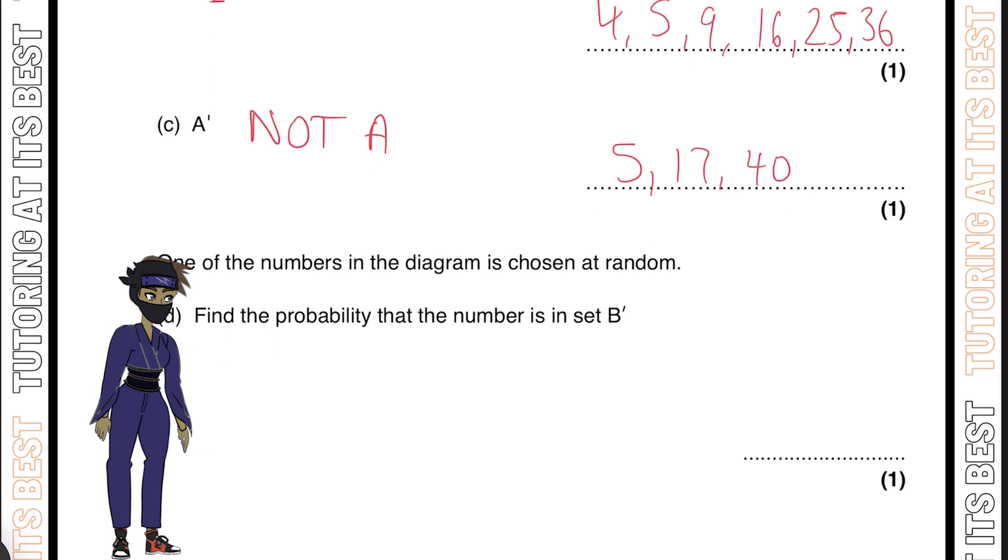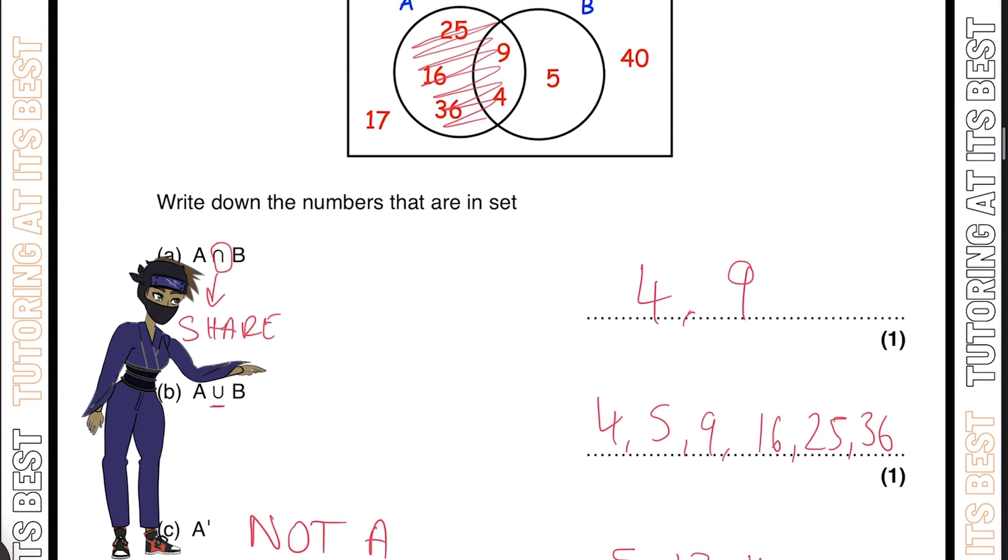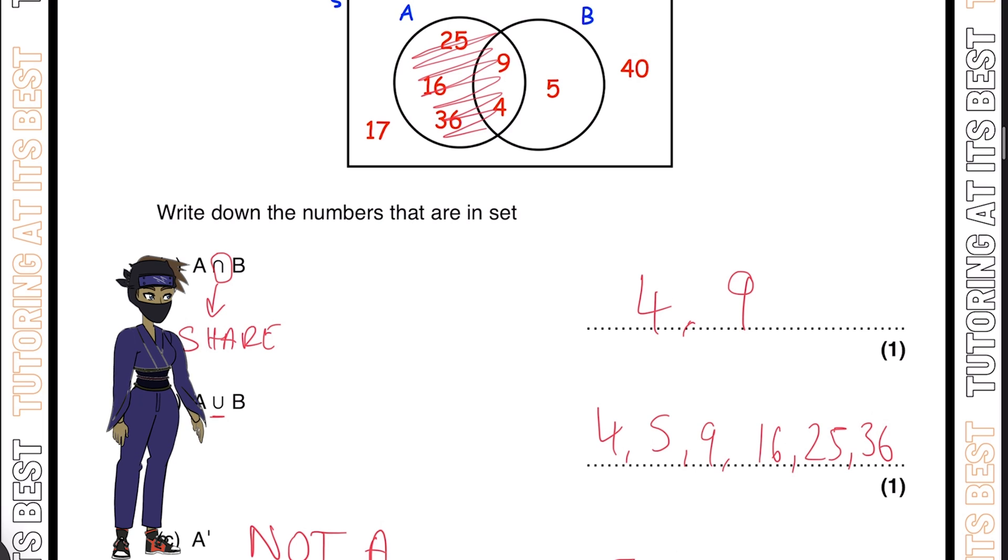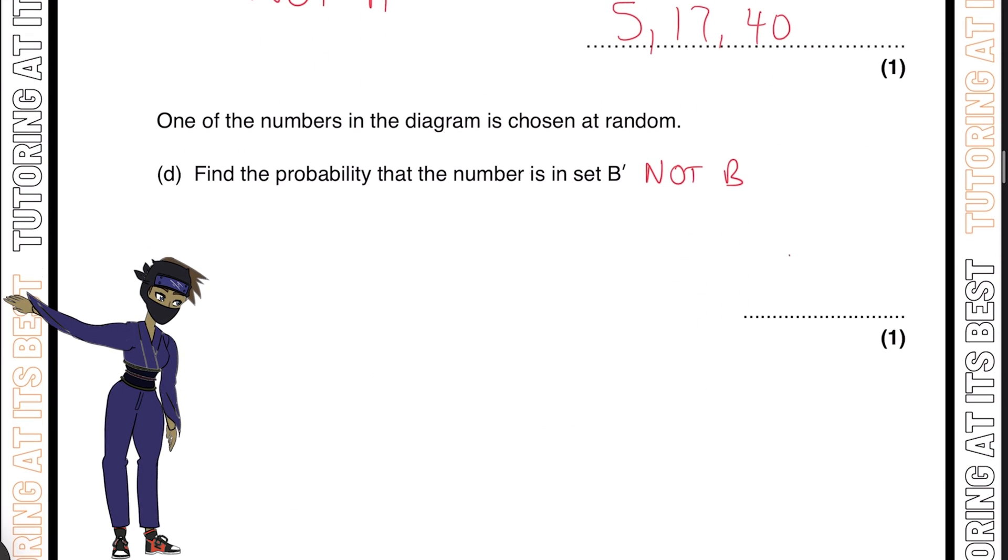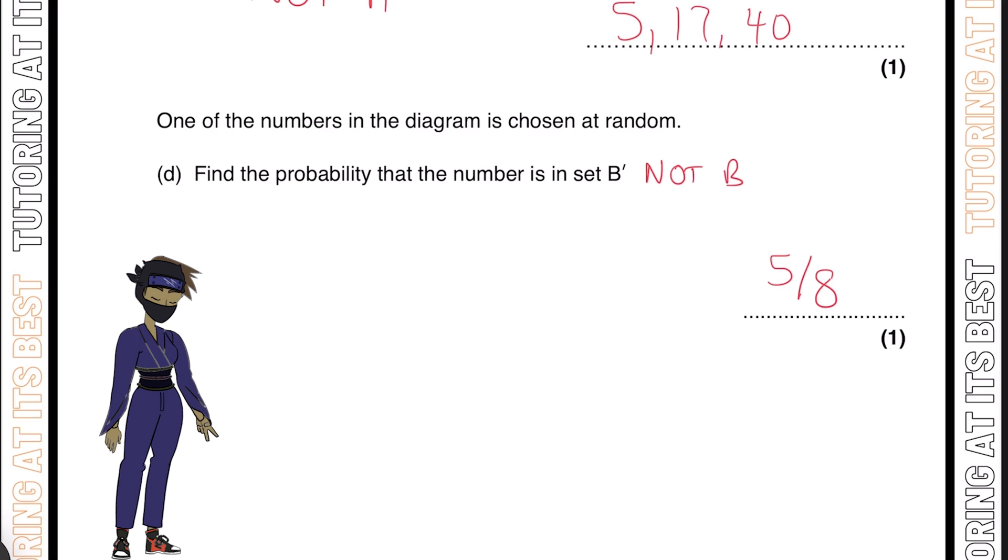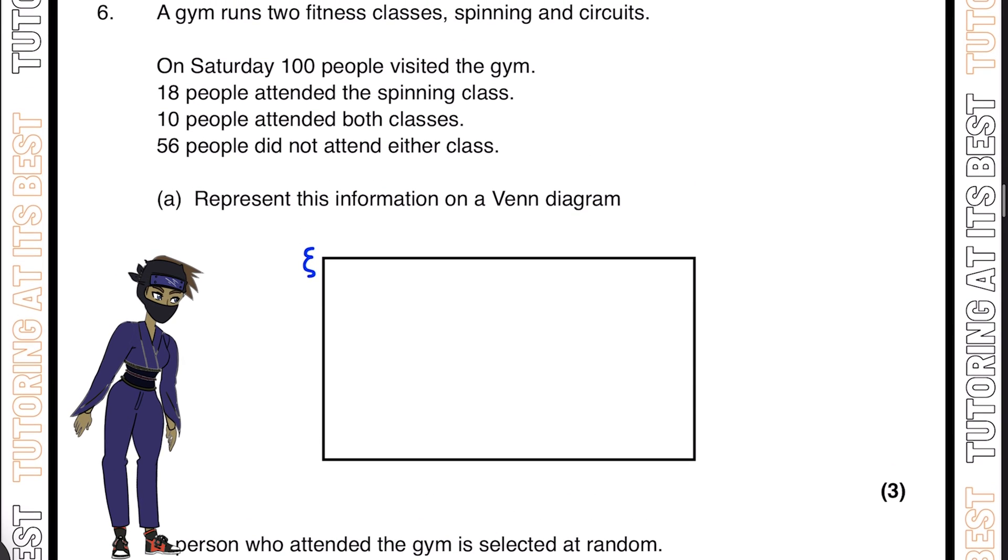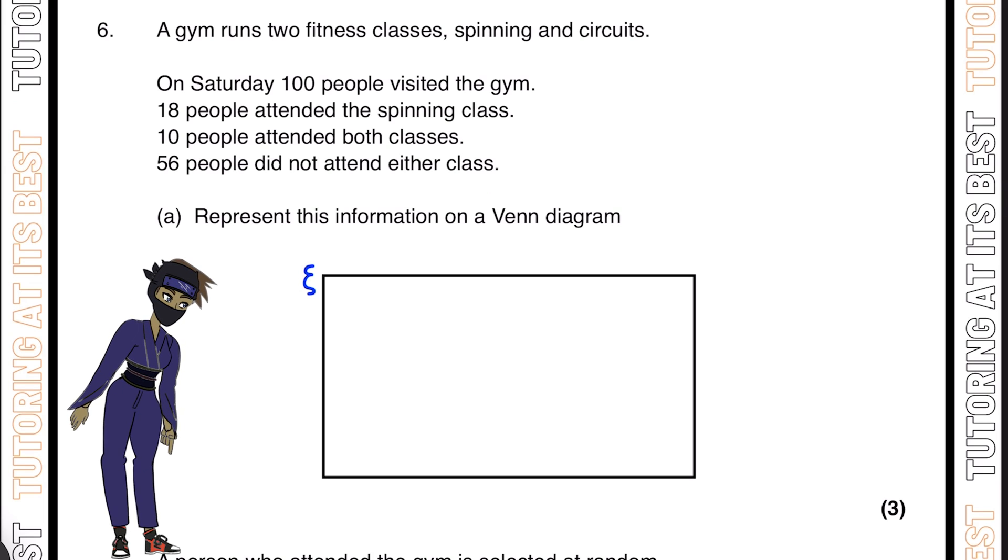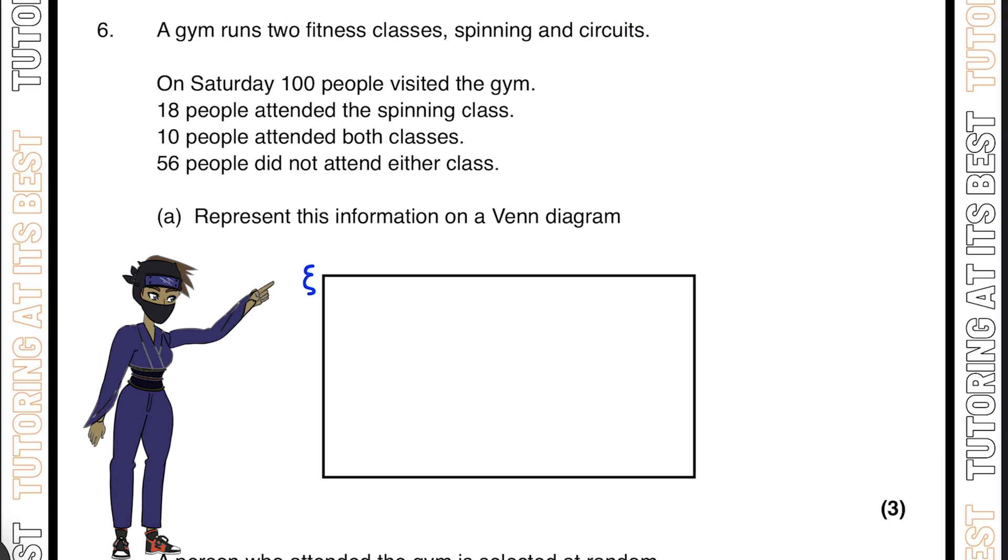For part D, one of the numbers in the diagram is chosen at random. Find the probability that the number is in set not B. If it's in not B, we know that's going to be 25, 16, 36, 17, and 40. So that's 5, and there's 8 in total. So we write 5 out of 8. You're doing really well so far, keep it up. Remember, you can pause the video at any given time, attempt the question, and then press play when you're ready.